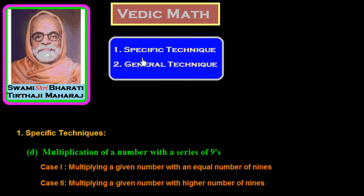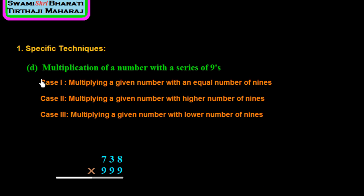Hi friends. In this session of Vedic Math, we study a specific technique for the multiplication of a number with a series of nines. This technique is divided into three parts: Case 1 — multiplying a given number with an equal number of 9s; Case 2 — multiplying with a higher number of 9s; and Case 3 — multiplying with a lower number of 9s. I would like to explain Case 1 first.